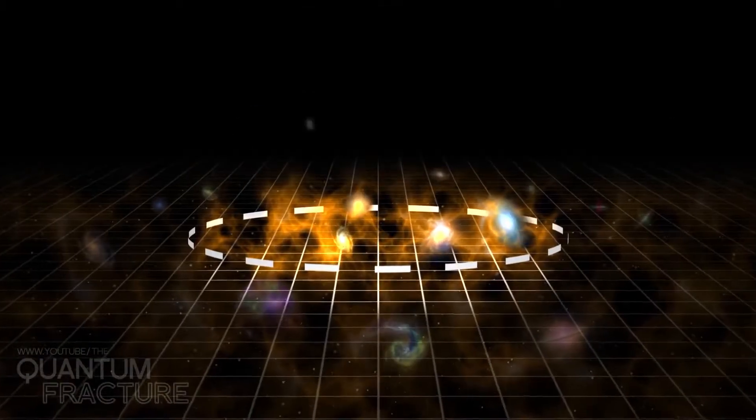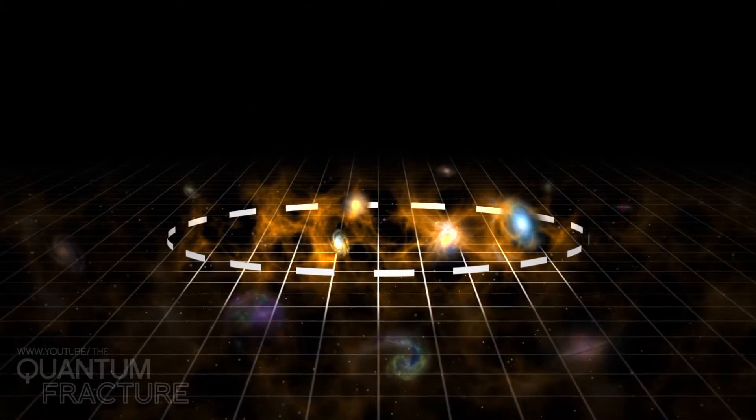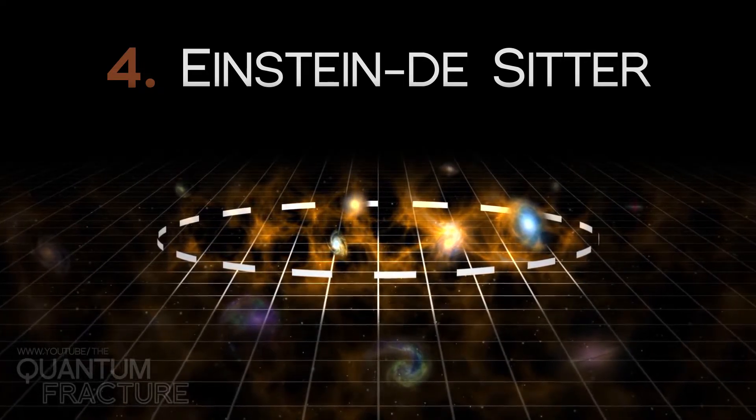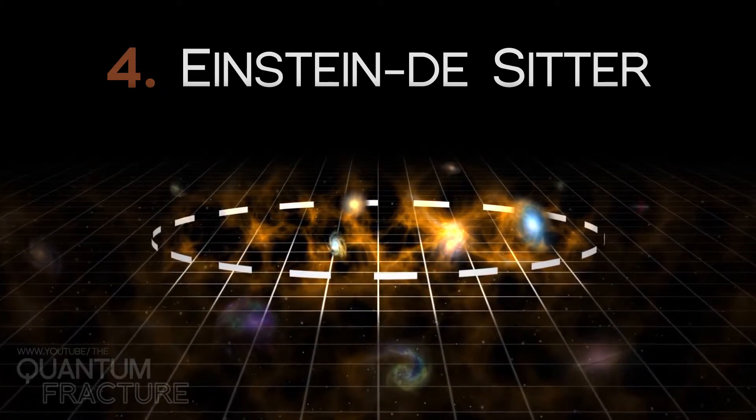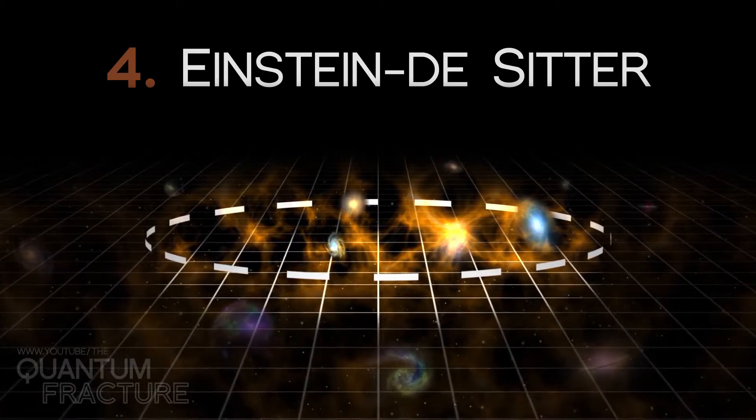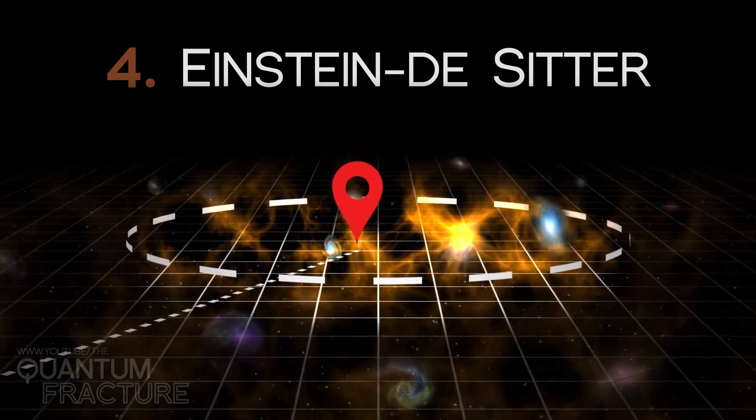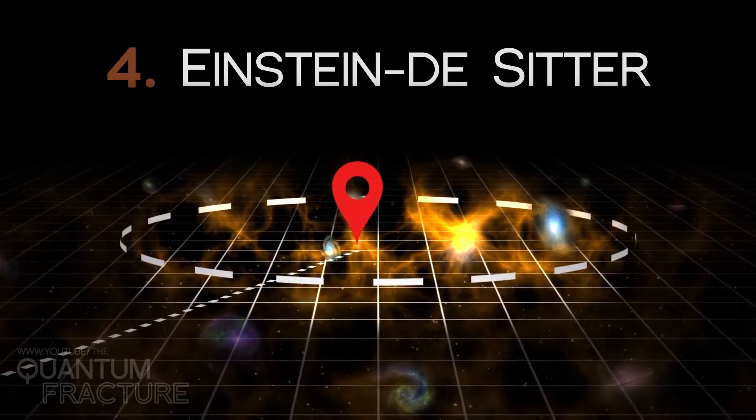However, if I add just the right amount of matter, I get number four, the Einstein de Sitter universe. Many people thought this was our type of universe. Since it has critical matter density, the geometry of this universe is the same one we learn at school, and the cosmic circumnavigation trick no longer works.